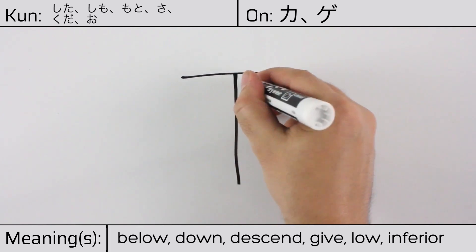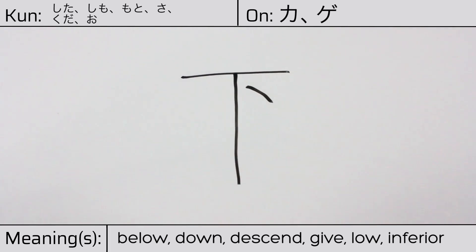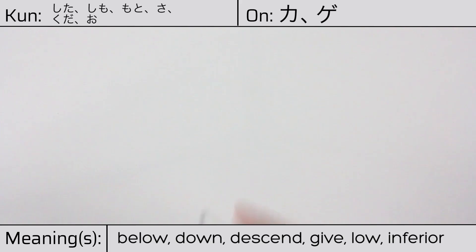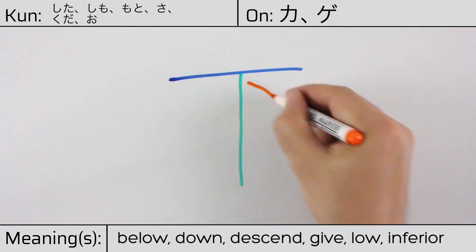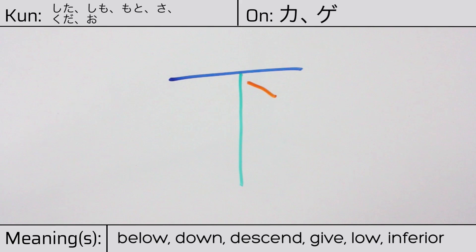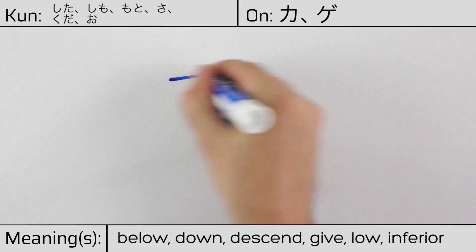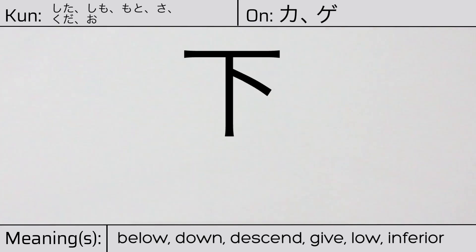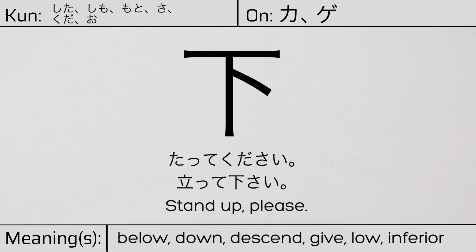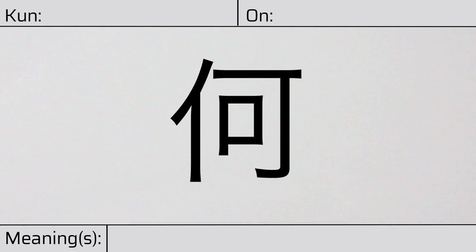Here is the stroke order. This character is made up of the following radicals or parts: wan, ichi, a vertical stroke, and a ten or dot radical. You can remember this kanji by the following hint: the fortune teller knows everything under the heavens. Our example sentence is: Tattete kudasai — Stand up, please.